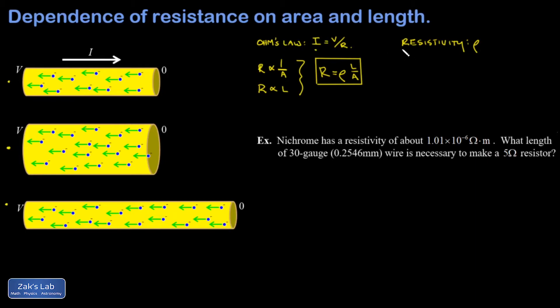Notice the units of resistivity. If I want ohms to pop out of this new formula, resistivity better have ohms in it. That second term, length over area, is one over meters, so resistivity better have meters in it to cancel that. Resistivity is measured in ohm meters.